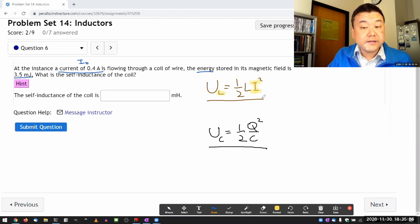So the similarity is that there's a term that depends on the dynamical quantity. In case of inductor, it's this current, that's my dynamical quantity, that is squared. And in case of capacitor, the dynamical quantity that's squared is the amount of charge stored on the capacitor.